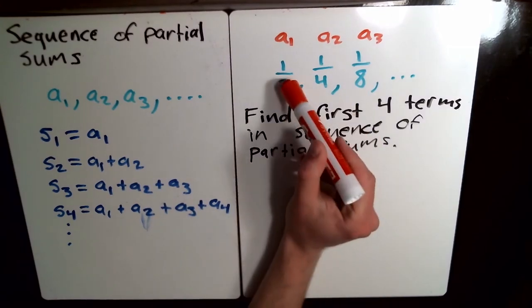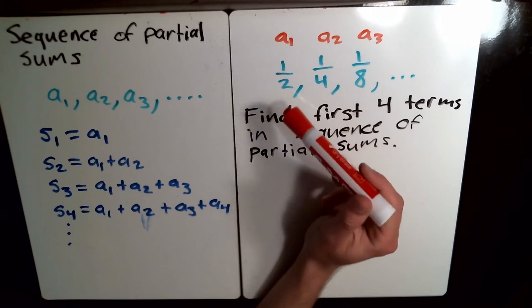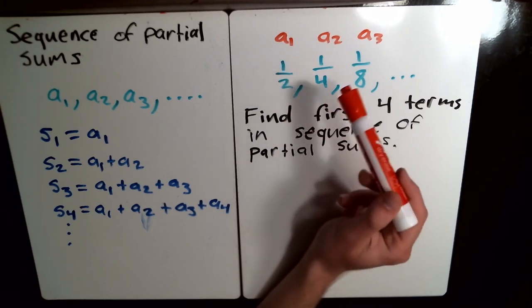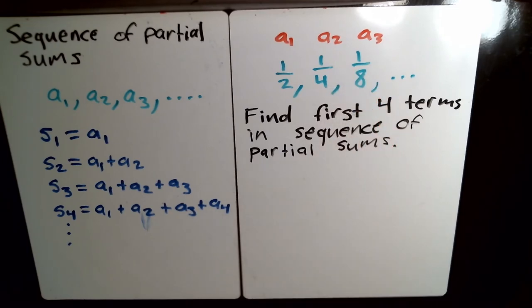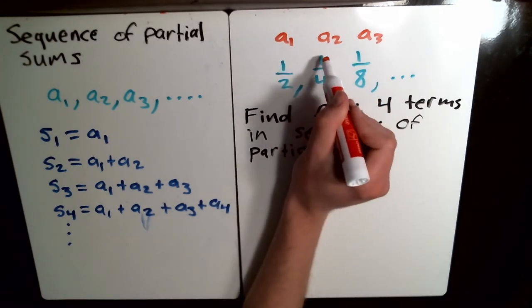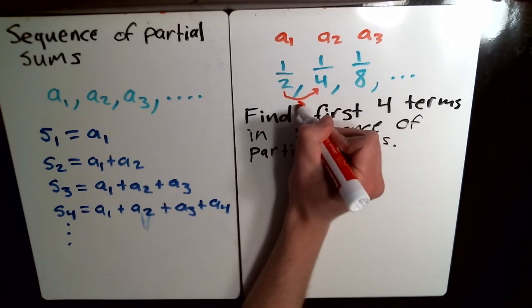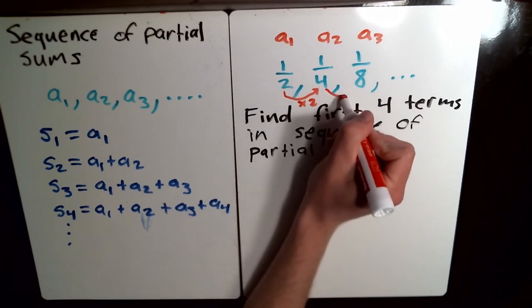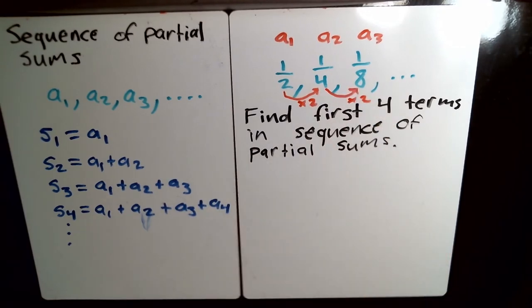Now, notice, what is the pattern that's happening here with these terms? Well, it starts at a half. Then it goes to a fourth. Then one eighth. Notice one is always on the top of the fraction. And to get between the bottoms, we're just timesing by two every time.